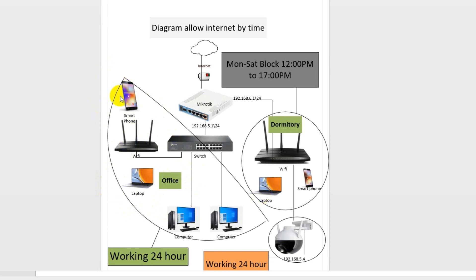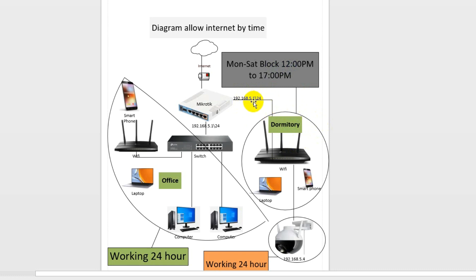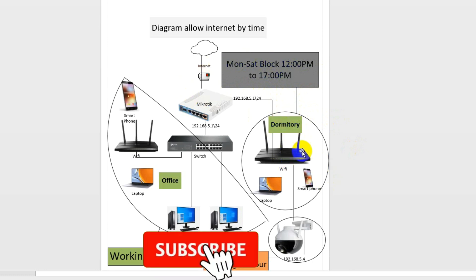Here this block is the office and this block is for the dormitory. The office has internet and it's not blocked — it works 24 hours. For the dormitory, I block the full range — that's a Class C or 254 IPs, the 5.1 range. We can block all or some IPs. We block the dormitory from Monday to Saturday, but on Sunday you don't need to block because Sunday is a holiday, so we allow internet for users.